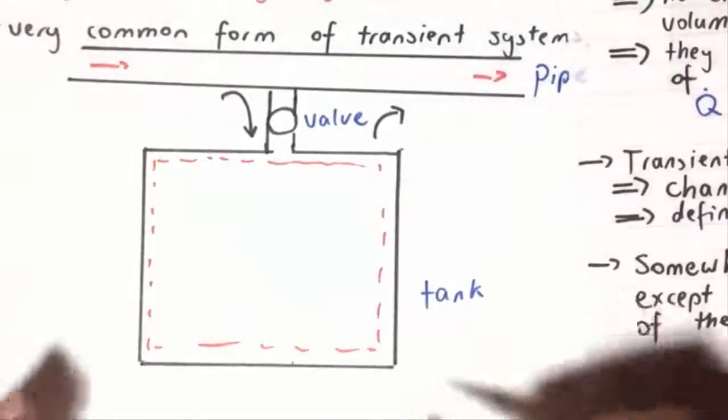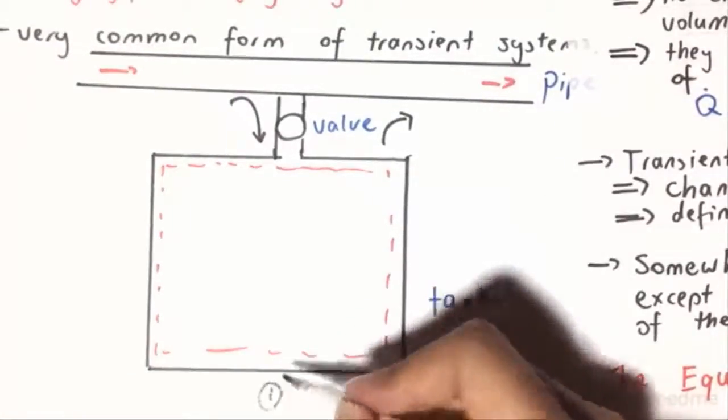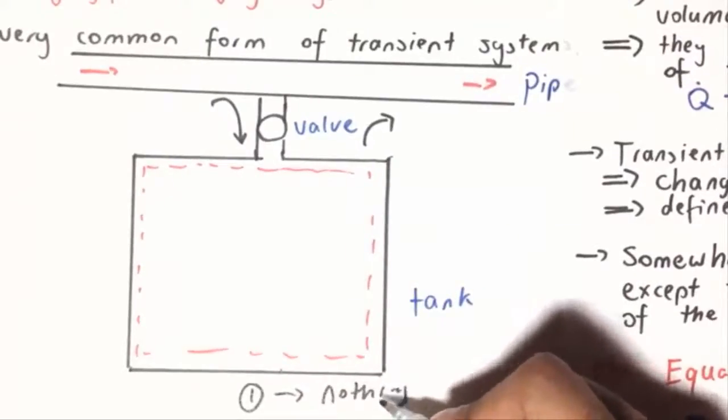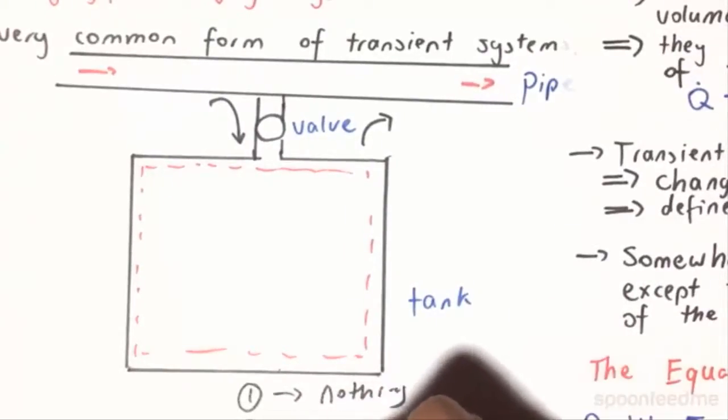At state 1, it's basically, if it's a charging system, at state 1 it's going to have like nothing in it. And if it's a discharging system, then at state 1 it will have a lot in it.